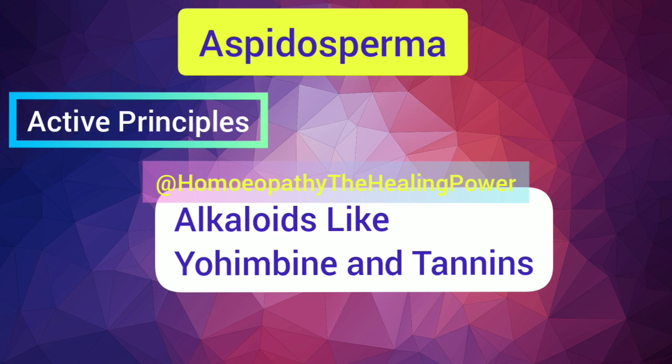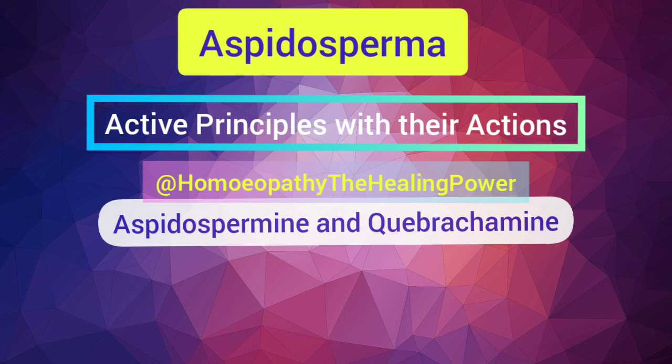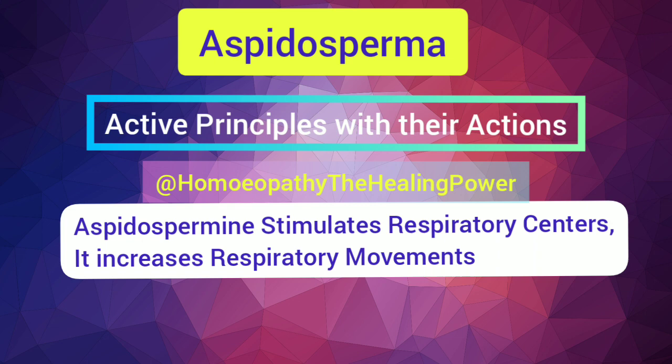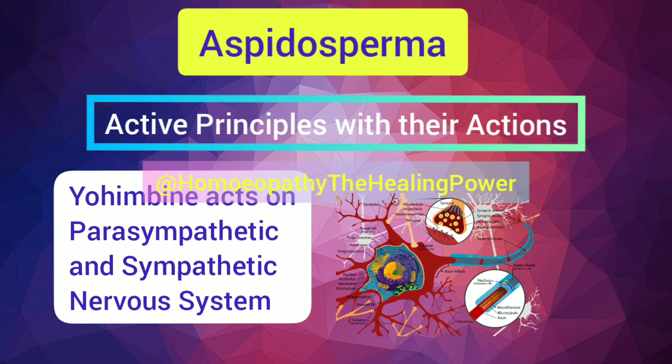The active principles of Aspidosperma include alkaloids such as yohimbine and tannins, as well as aspidospermine and quebrachamine as main constituents. Aspidospermine and quebrachamine have adrenergic blocking activities on the body. Aspidospermine also stimulates the respiratory centers, increases respiratory movements, and gives tone to the heart muscles, whereas yohimbine acts on the parasympathetic and sympathetic nervous system.